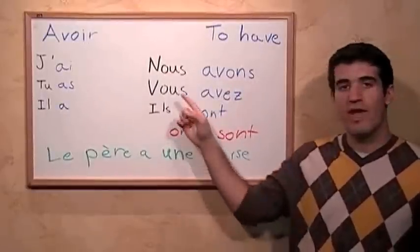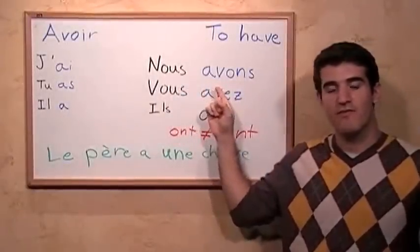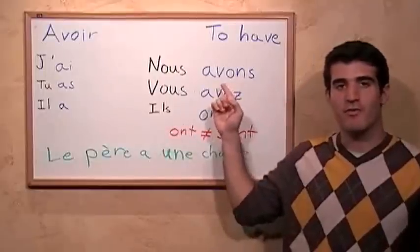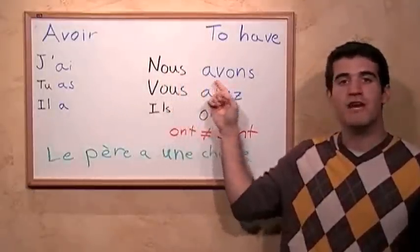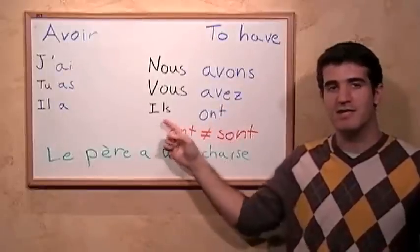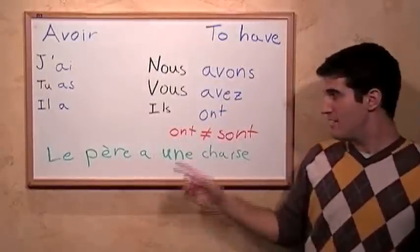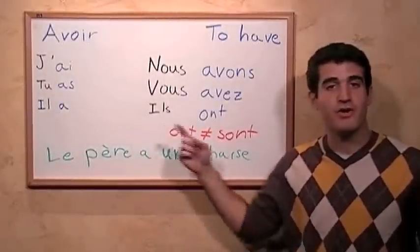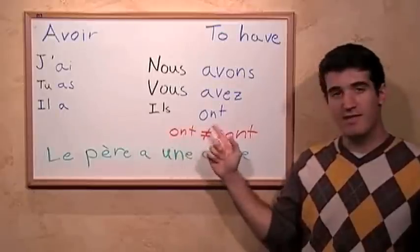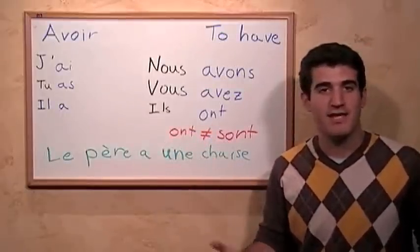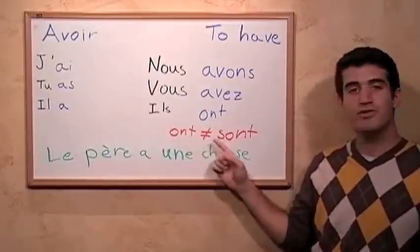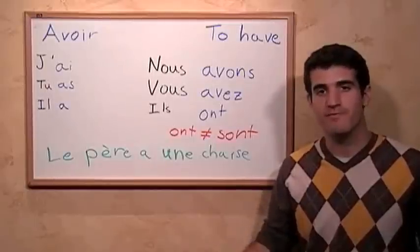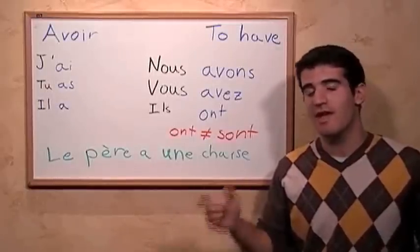Now, in all these three cases, we have this situation where, because the verb starts with a vowel, the s of the word before it is pronounced as part of that word with the vowel. So we have nous avons, vous avez, and ils ont. With ils ont, we can see that this sounds and looks very similar to the word for 'they are,' ils sont. But it's slightly different — the difference is between an s and a z. This subtle difference is very important and we have to pay attention to it.